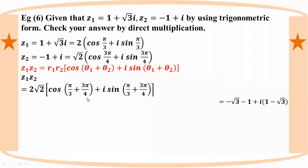The result is minus root three, minus one plus i, and one minus root three i. The angle computation involves π/3 plus 3π/4, and we simplify to find the exact trigonometric values.